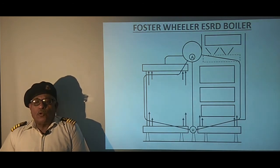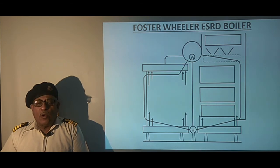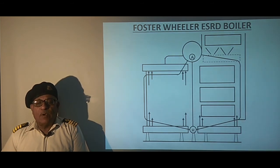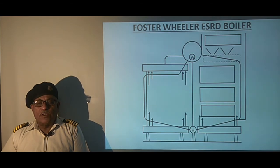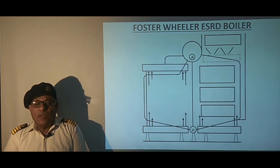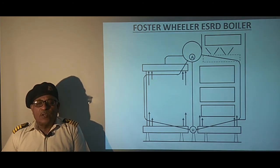This sketch shows an ESRD boiler which is similar in construction to the ESD-4 design, but a steam reheater is placed between the secondary superheater and economizer, which is used to increase the dryness of steam in the low pressure turbine. Let's see the main components of the boiler and the flow of steam.